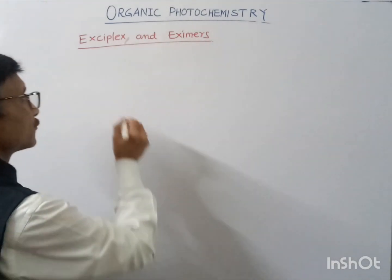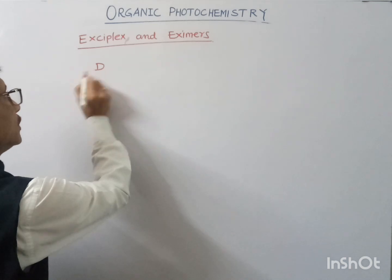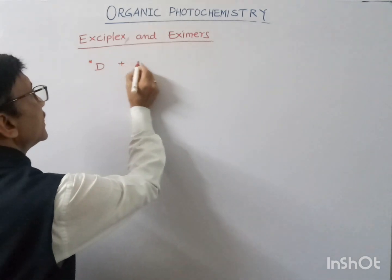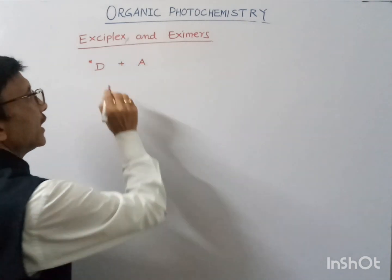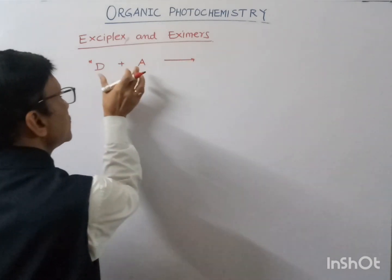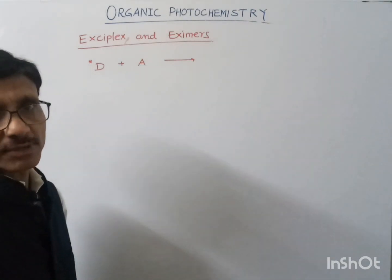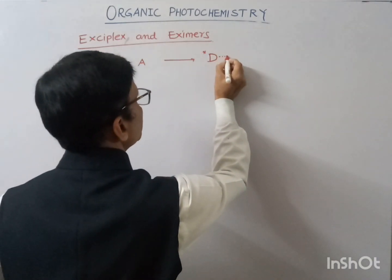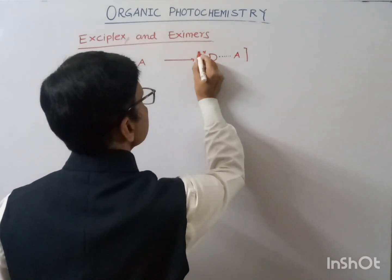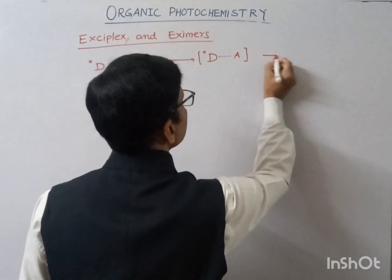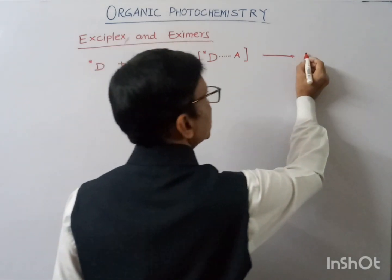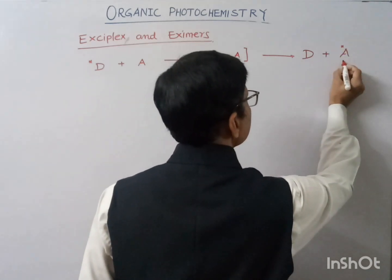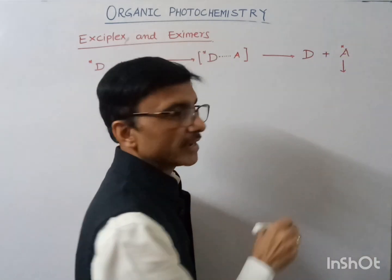During energy transfer, we have a donor molecule in an excited state that interacts with an acceptor molecule. During this interaction, a collision between the donor molecule and acceptor molecule takes place and generates a collision complex. Finally, the donor molecule returns to its ground state, the acceptor molecule becomes excited, and this excited acceptor molecule gives you the product.